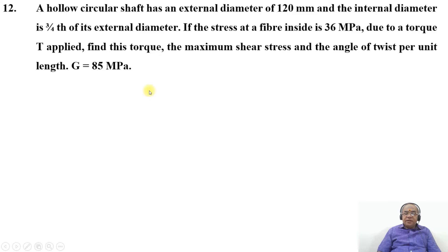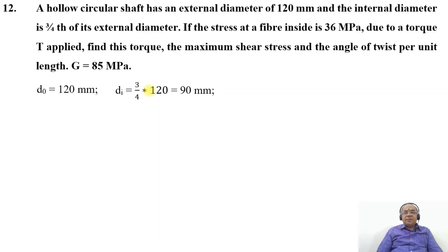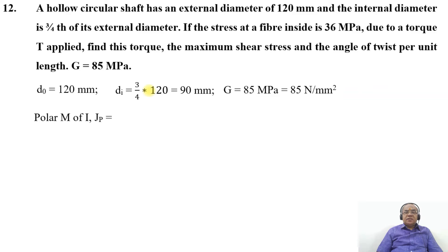The problem is given, so first we have the external diameter D_naught equals 120 mm, and the internal diameter Di will be equal to three-fourths into D_naught, which is three-fourths into 120, which equals 90 mm. The shear modulus G is 85 MPa, which is 85 Newton per mm square, and the stress at the inner fiber is 36 MPa, which is 36 Newton per mm square.